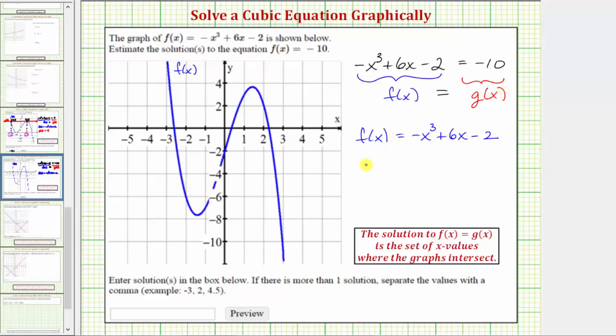We also need to graph g(x) equals negative 10. Notice how g(x) is a constant function, which means the graph will be a horizontal line passing through negative 10 on the vertical axis.